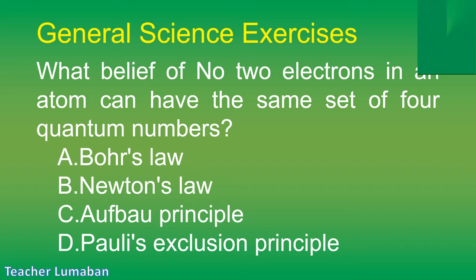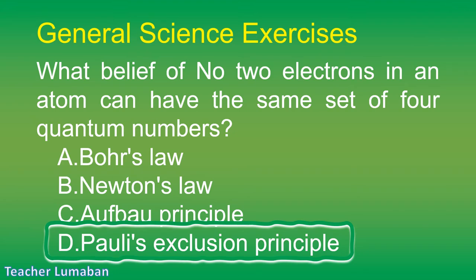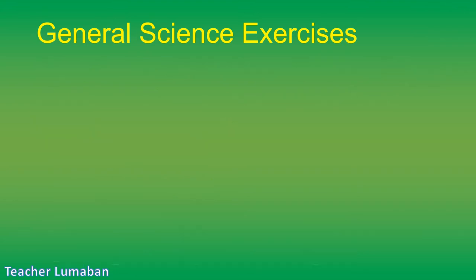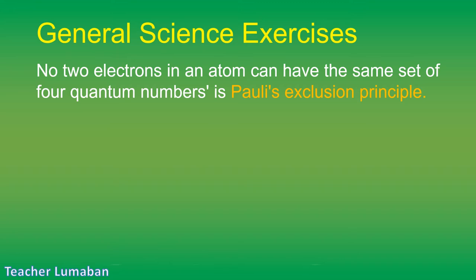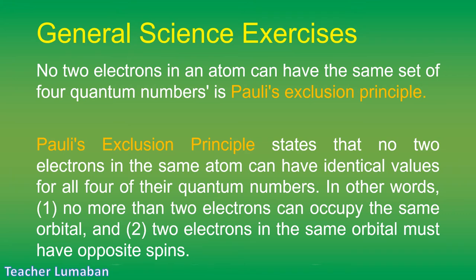The correct answer is Letter D: Pauli's exclusion principle. No two electrons in an atom can have the same set of four quantum numbers — this is Pauli's exclusion principle. It states that no two electrons in the same atom can have identical values for all four quantum numbers. In other words: no more than two electrons can occupy the same orbital, and two electrons in the same orbital must have opposite spins.